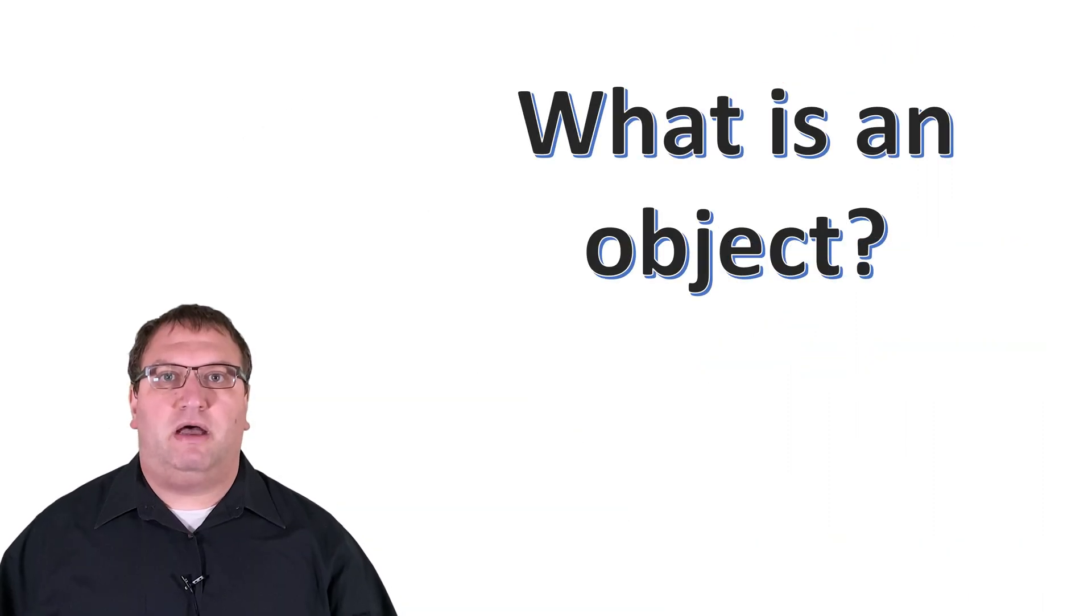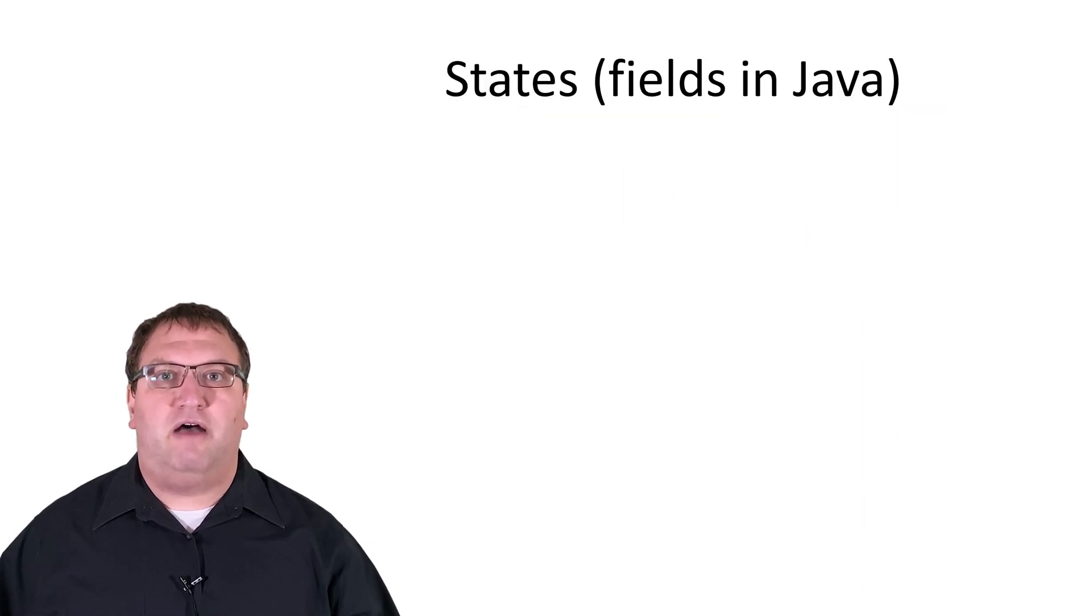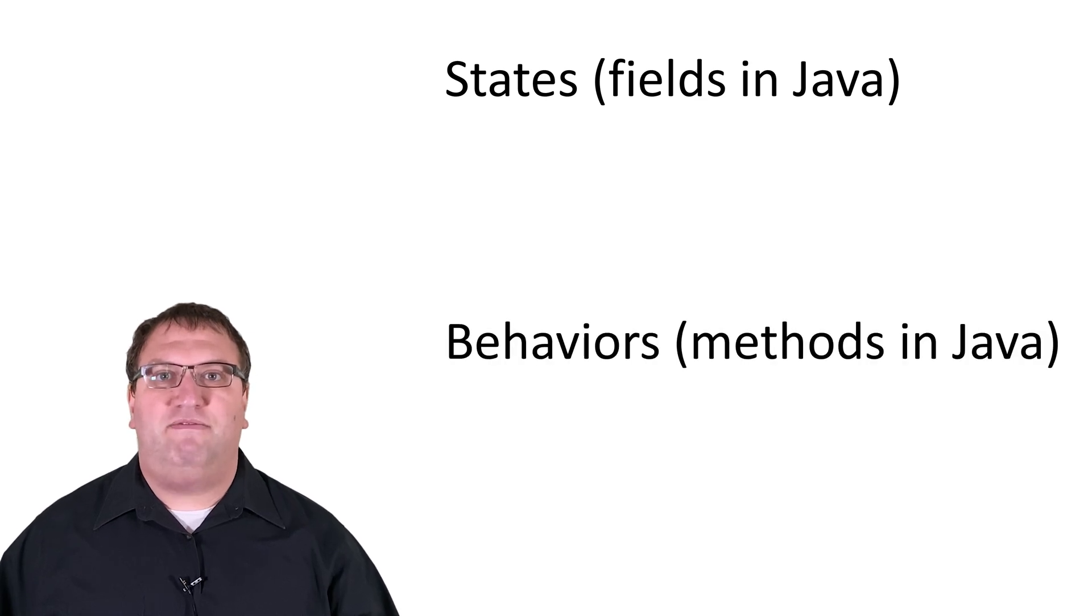First, let's talk about what an object is. In object-oriented programming languages like Java, objects have two types of characteristics. First, they have states, which in Java we represent with field variables. Second, they have behaviors that in Java we represent with methods.